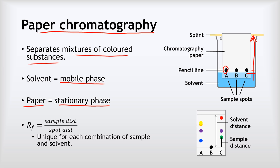Because those substances have different amounts of solubility in the solvent, some of them will go further and some less far. We can see here how those individual black dots have separated out into all the different colored substances that they're made from.